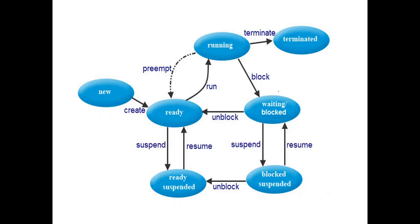Now let us see another state — the waiting state or blocked state. Suppose process P1 is already running and being executed by the CPU, so it is in the running state. Now in between, process P1 wants to use some resource like an input/output resource — for example, a printer. So process P1 wants to use the printer.